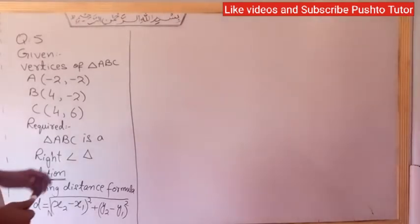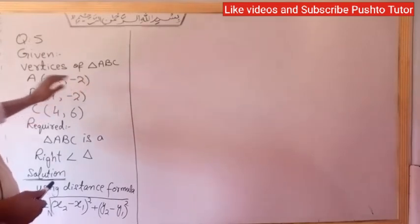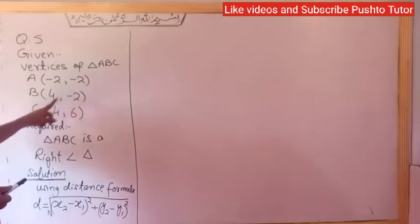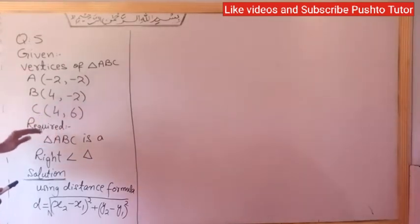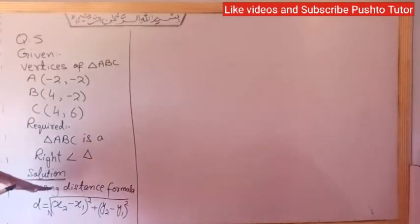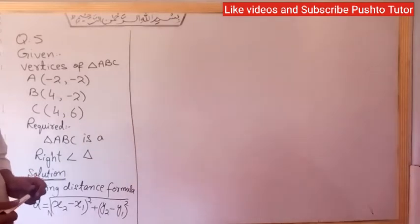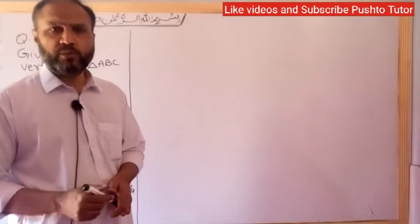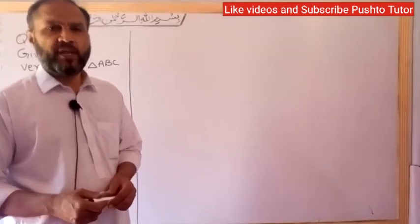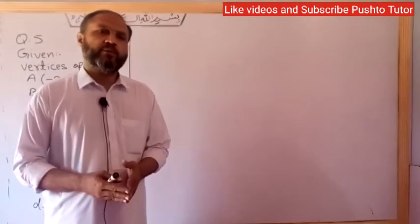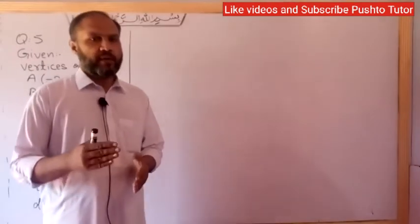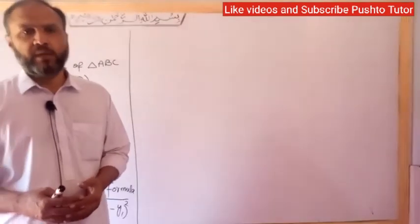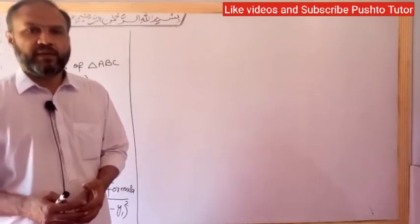Now question number 5. Given the coordinates of the vertices of triangle ABC: vertex A(-2,-2), vertex B(4,-2), vertex C(4,6). Required: prove that triangle ABC is a right angle triangle. Solution: using the distance formula, we will find each side. Then apply Pythagoras theorem to verify.